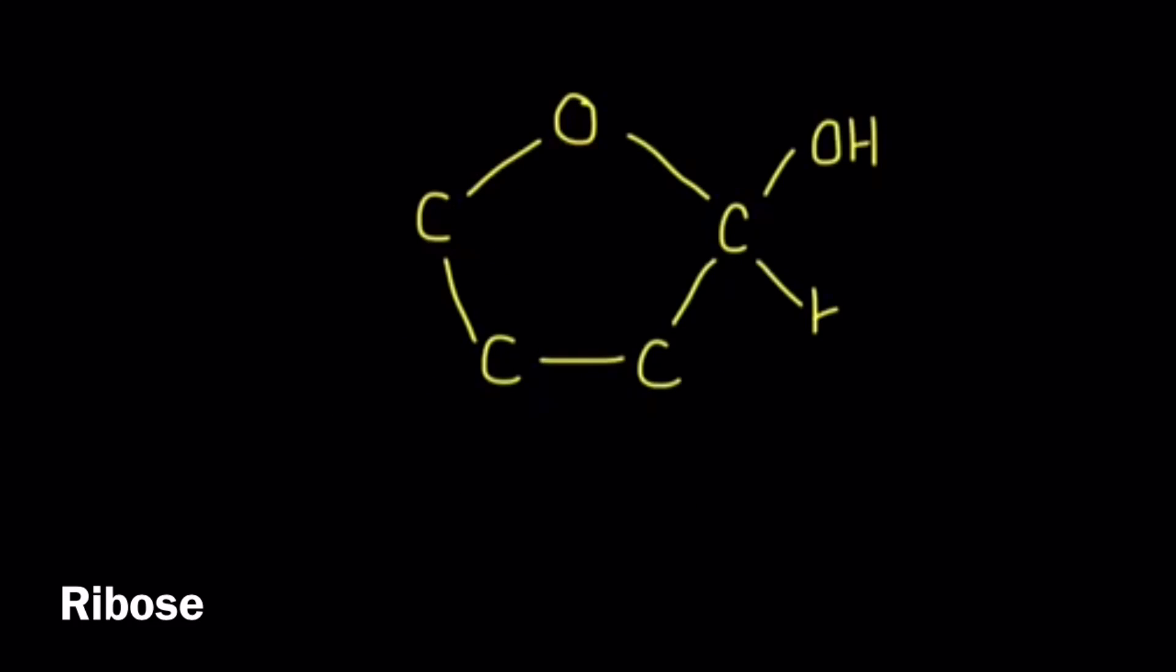The next molecule is ribose. Whereas glucose was a six carbon sugar, ribose is a five carbon sugar.